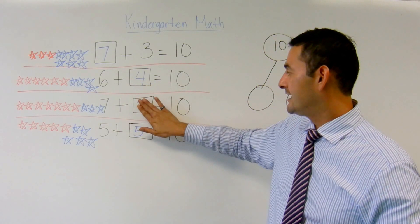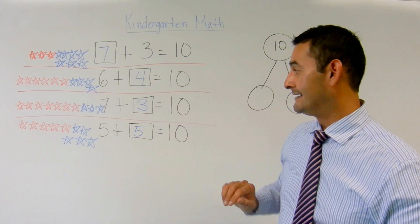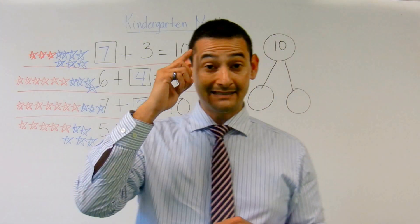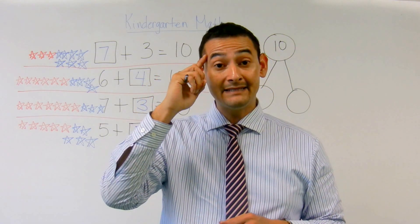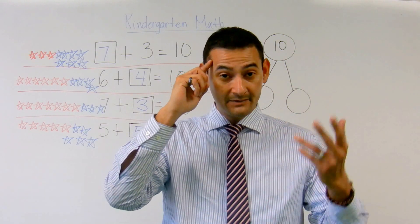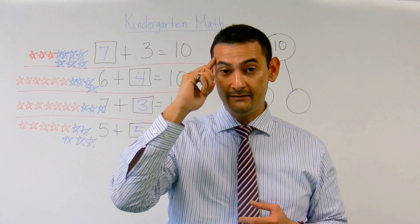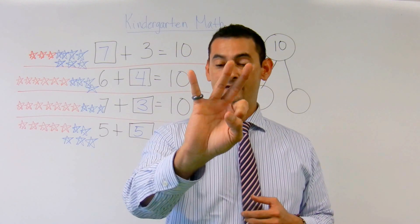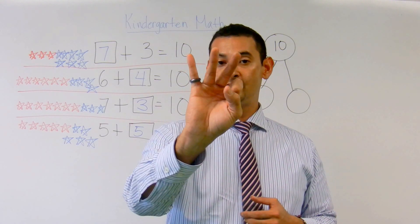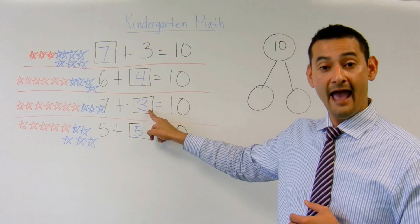Now let's take a look at the next one. 7 plus something equals 10. I'm going to put 7 in my head and I'm going to count up to 10. Ready? 7, 8, 9, 10. How many do I have? 1, 2, 3. Is that 3? Absolutely.